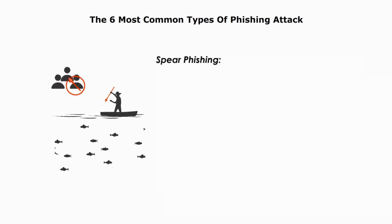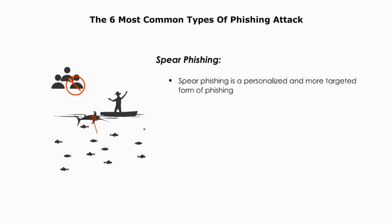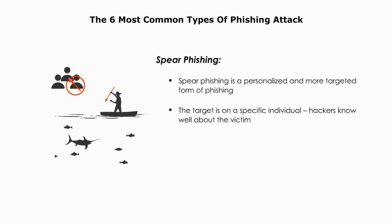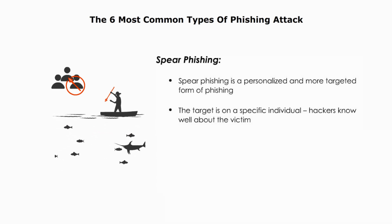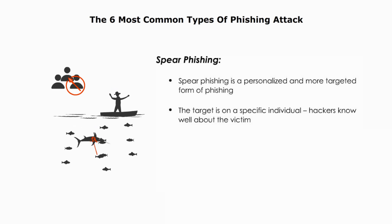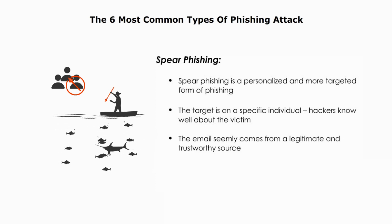Spear phishing is a personalized and more targeted form of phishing. The target is a specific individual. A typical scenario is the hacker knows a lot about the victim, such as his name, job title, family, or even his hobbies. The hacker can easily get this information from social media platforms. The email seems to come from a legitimate and trustworthy source.